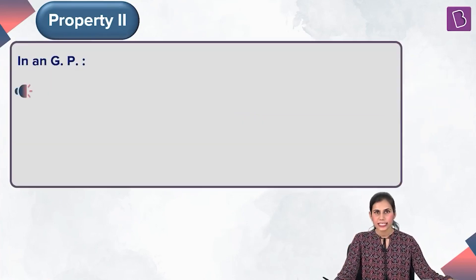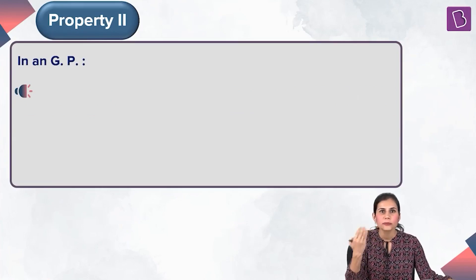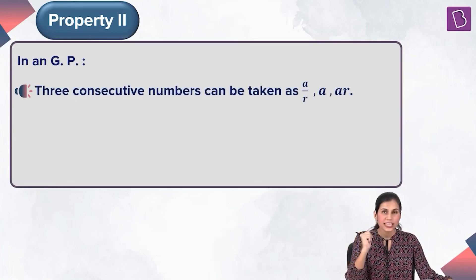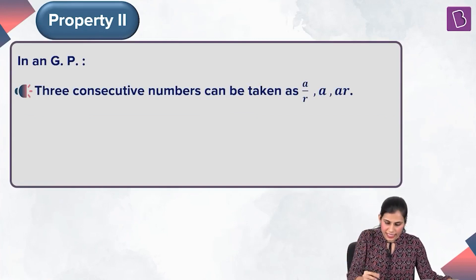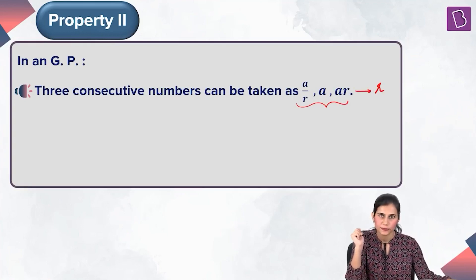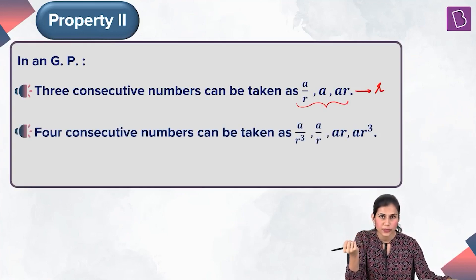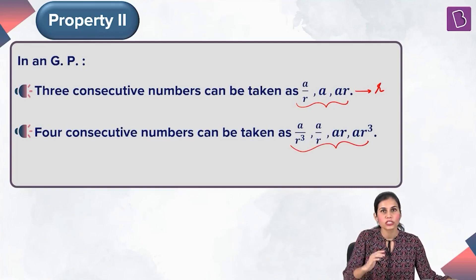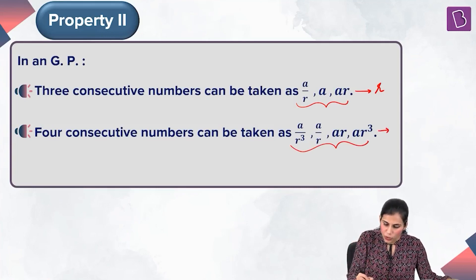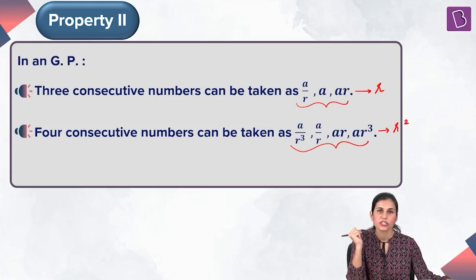The next property says that if you want to select three terms which are in GP, the most convenient way is to consider them as A/R, A, and AR — this sequence will be a GP with common ratio R. If you want to select four terms in GP, choose them as A/R³, A/R, AR, and AR³, in which case this sequence will be a GP with common ratio R squared.